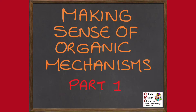So that's what this series of videos seeks to do, and in this first video we'll specifically look at the business of adding curly arrows to show the movement of electrons if shown the reactants at the beginning and the products at the end of a step in a reaction.